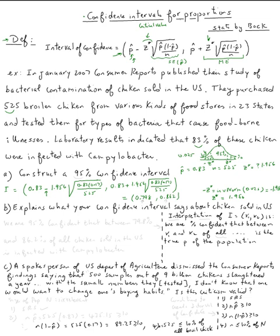Now for question b, explain what your confidence interval says about chicken sold in the U.S. This is how you always do interpretation. You always say we are some percentage confident. In our case, we are 95 percent confident, because that's what the question says right here.